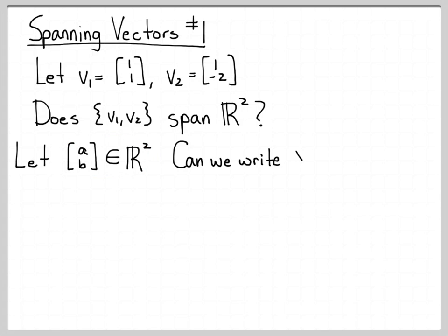What we're really being asked is, can we write V1 and V2, can we weight them to yield the vector [a,b]? Can I write any vector I choose [a,b] as a weighted combination of V1 and V2? That's what it means to span R²—if any vector in R² can be written as a linear combination of V1 and V2.